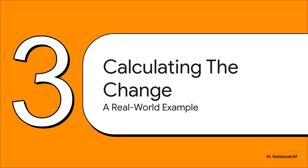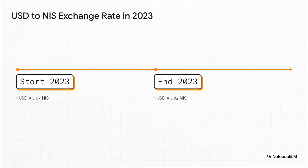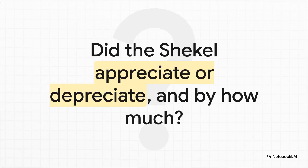Currencies go up and down, but the next logical question is: by how much? Let's look at a real-world example. In 2023, at the very beginning of the year, one US dollar would have cost you 3.67 shekels. By the end of the year, that same dollar cost 3.82 shekels — it's taking more shekels to buy a dollar, so the shekel depreciated. But by exactly what percentage? There's a simple formula: take the new rate, divide it by the old rate, subtract 1, then multiply by 100.